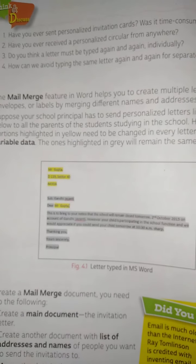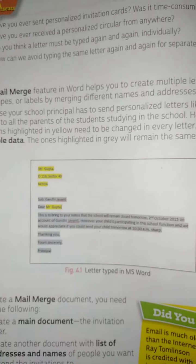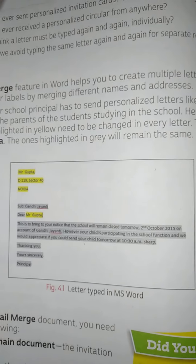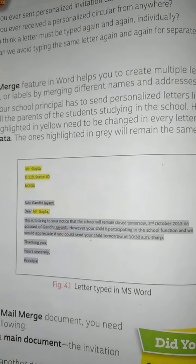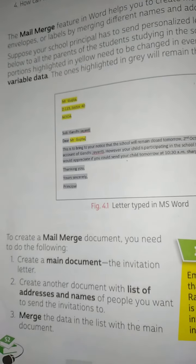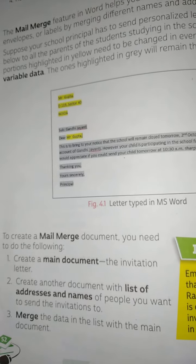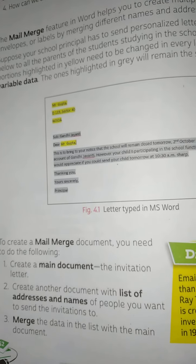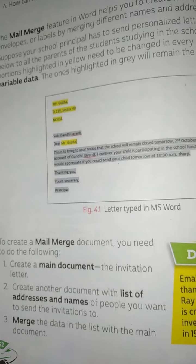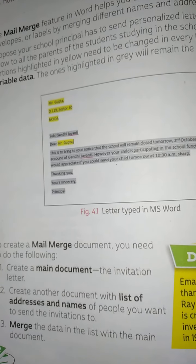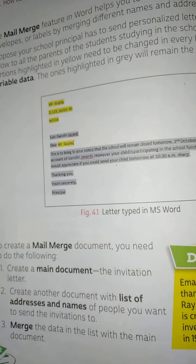The variable data is name and address. To type the letters in MS Word, the first step in mail merge is to create a main document — the invitation letter file. The next step is to create another document with the list of addresses and names.